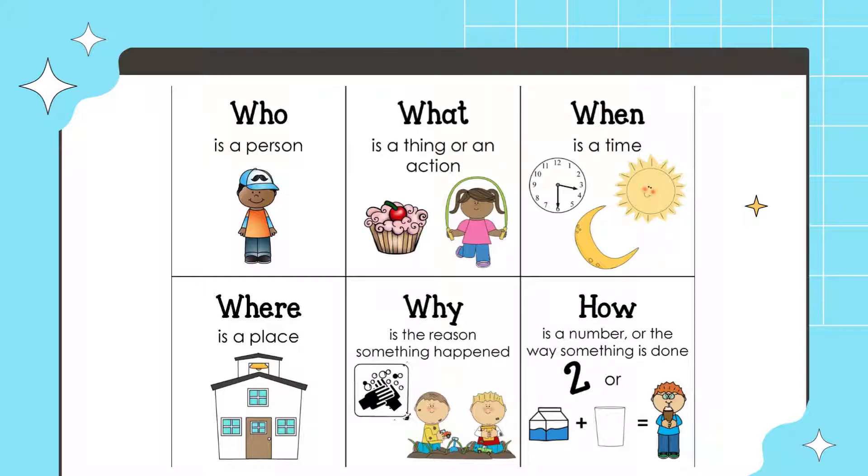Now I'm going to explain what all these question words are for. So who is used when talking about a person. What is when it's about a thing or an action, like if you're eating or jumping or running. When is for a time, like you're asking when is your birthday. Where is for a place.